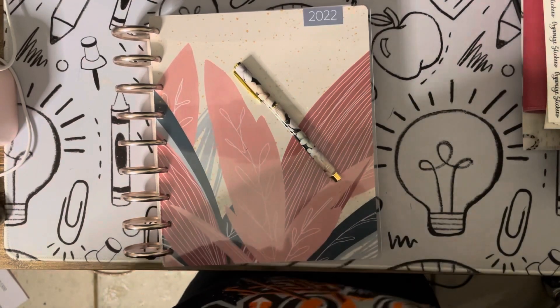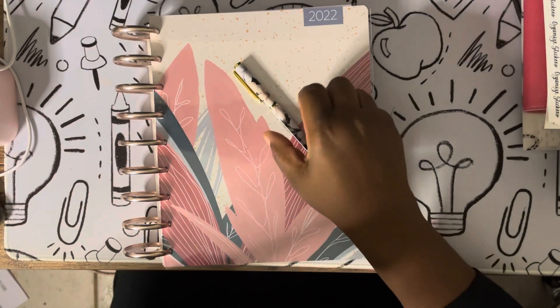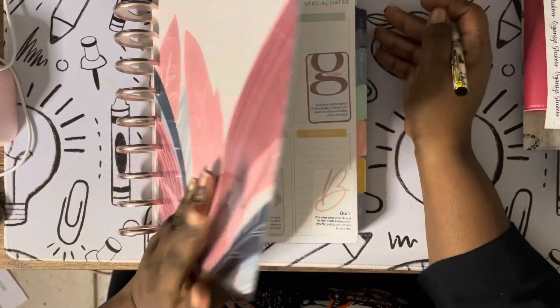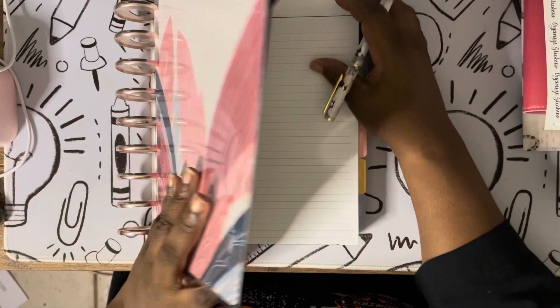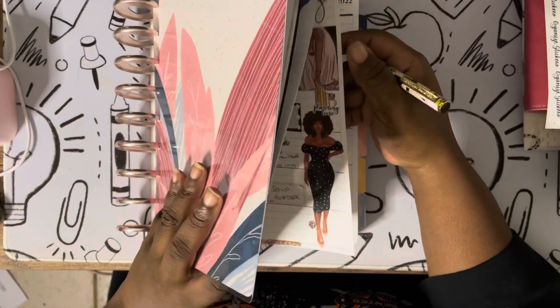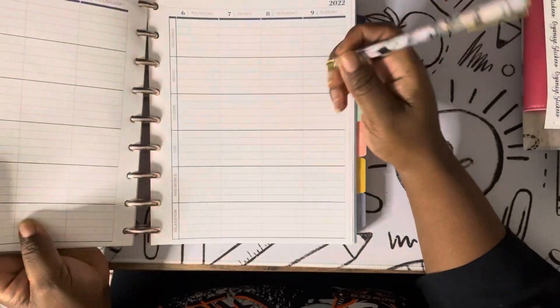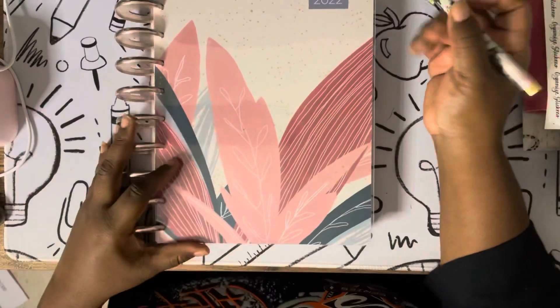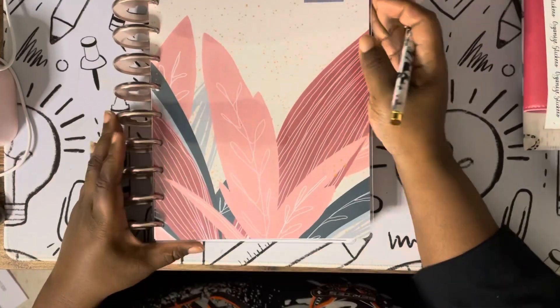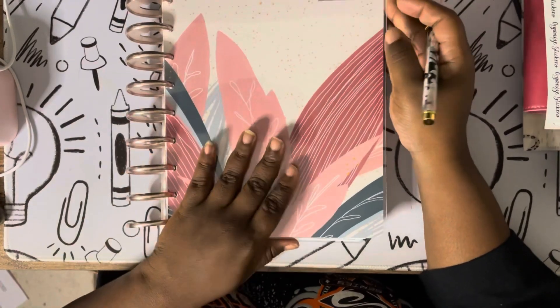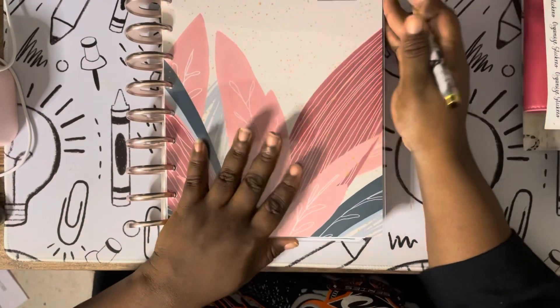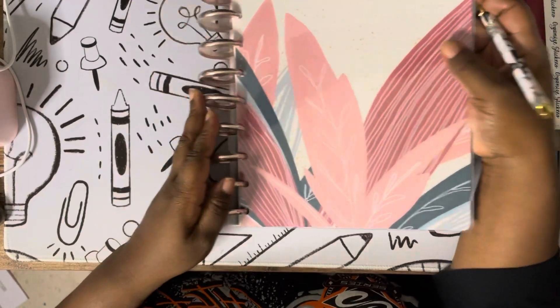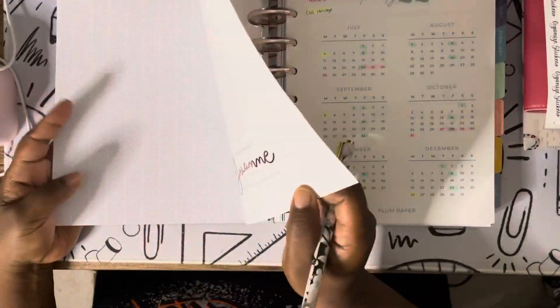Hello everybody, it's your girl Yvonne. I'm coming to you with my plan with me for this upcoming week in my Plum Paper planner. This will be week dates the 3rd through the 9th. Again, I'm using the 2022 Plum Paper planner in the me format. I want to show y'all a quick run through of how I set it up a little bit because I did do some things to it.